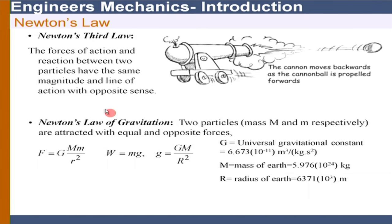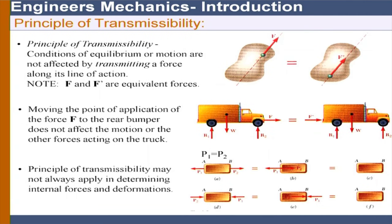Newton's law of gravitation: two particles are attracted with equal and opposite forces, from experimental evidence. If we consider a particle at the Earth's surface, the force equals the mass multiplied by the gravitational constant, which is 9.81 meters per second squared. Next is the principle of transmissibility: when we want to solve for equilibrium, the force can be taken anywhere along its line of action without affecting the equilibrium or motion.